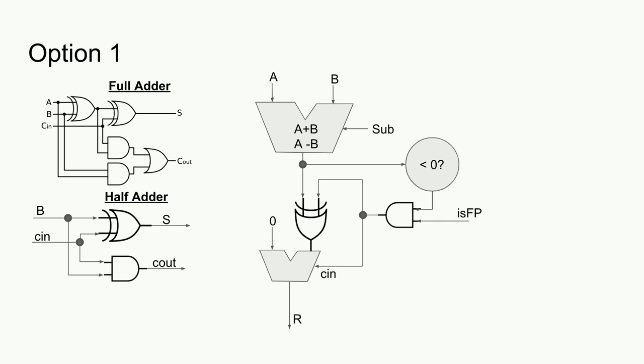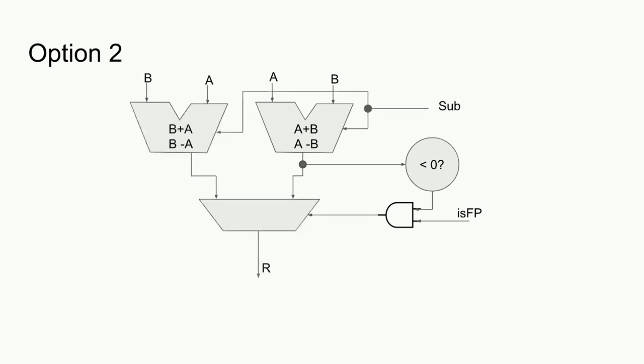The next option is to duplicate the full adder and simultaneously perform A-B and B-A, then select the non-negative output result via a multiplexer.